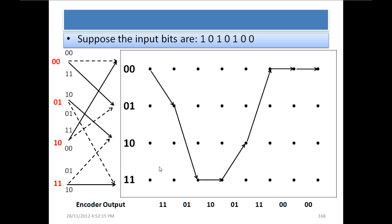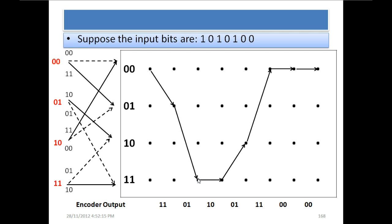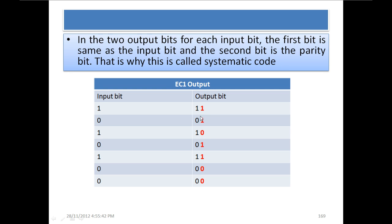If you pay attention, you will find that these outputs are systematic. Look at this: 1, 0, 1, 0, 1, 0, 0 — these bits are the same as the input bits, and the other bits are the parity bits added with them. That is why it is systematic. As we know, if the parity bits are added alongside the information bits, we call it systematic. This is why it is called a recursive systematic convolutional code. In the previous convolutional encoding, the output was not necessarily systematic.